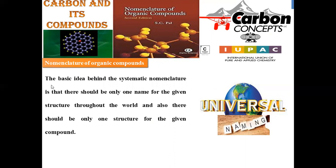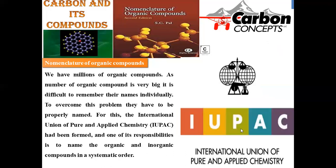The basic idea behind systematic nomenclature is that there should be only one name for a given structure. For example, in our locality we keep one name for a compound, but if we move to any other nation the name will be changed, causing ambiguity - though the compound is the same the naming is different. In order to clarify all these hurdles, systematic nomenclature with proper protocols and guidelines is provided by the International Union of Pure and Applied Chemistry.